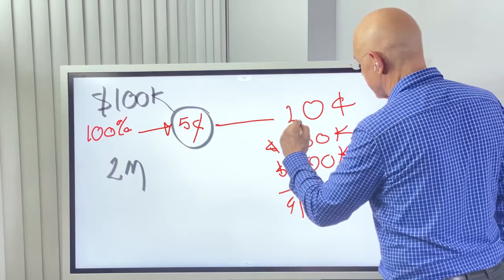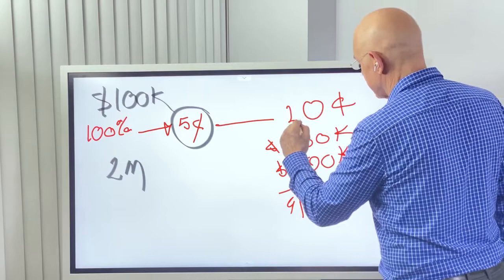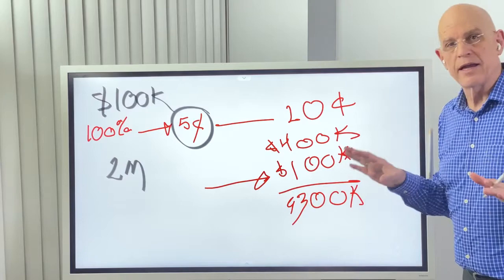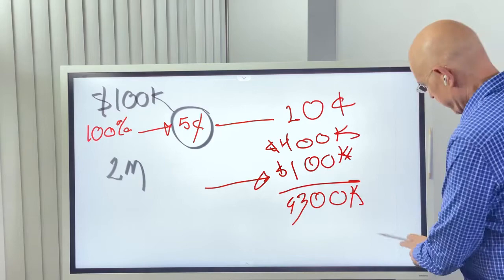Let's say now that the stock price goes to 20 cents. Well this becomes $400,000 and this becomes a $300,000 profit. Not bad, huh? Now this assumes that you paid cash for it and you have a cashless option with this warrant, but you can always pay cash, which there's pros and cons.